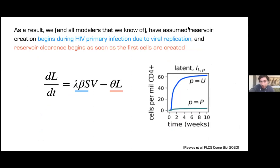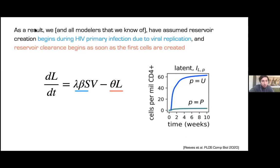In terms of a model of this, most modeling papers assume reservoir creation begins right away during primary infection: the change in reservoir size over time includes a fraction of viral production that gets put into the reservoir immediately, plus exponential clearance once cells are created. What this generates is creation of the reservoir within the first weeks, saturating after the peak.